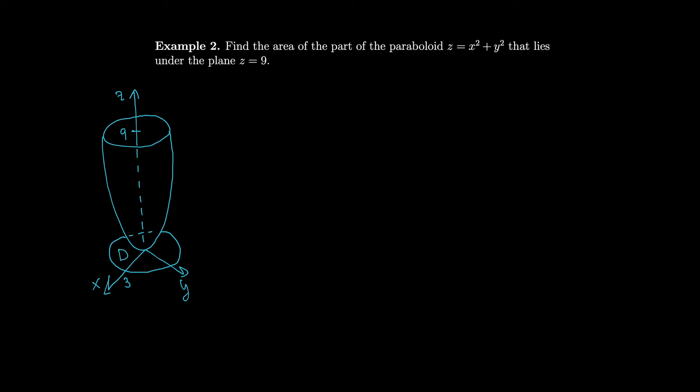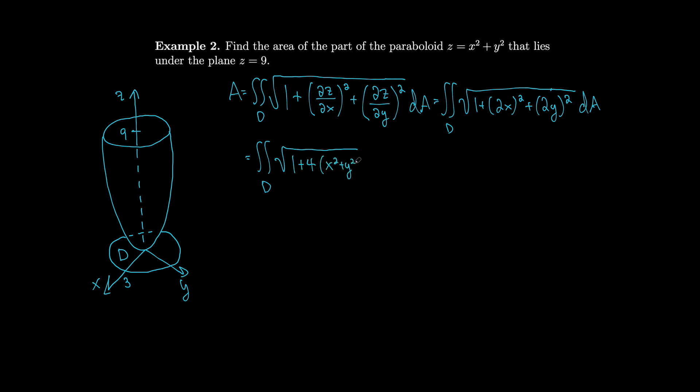So how about I call that disk D? And that's what we're integrating over. So our surface area is the double integral over D of the square root of 1 plus each of our partial derivatives squared. So partial z with respect to x plus partial z with respect to y. And I'm going to plug in now for our partial derivatives because we can do that pretty quick. It's 1 plus 2x squared plus 2y squared. And let's see. We're going to have to factor out a little bit because it looks like we have a 4 in both of these guys. So I could write this as the square root of 1 plus 4 times x squared plus y squared, dA.